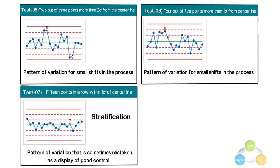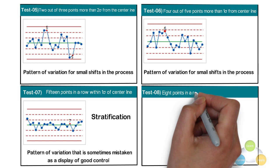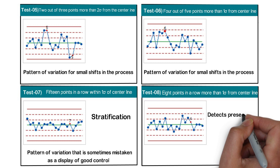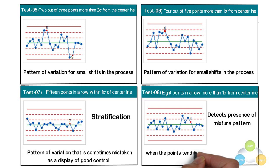Test 8: 8 points in a row more than 1 sigma from the center line on either side. Test 8 detects a mixture pattern. A mixture pattern occurs when the points tend to avoid the center line and instead fall near the control limits.